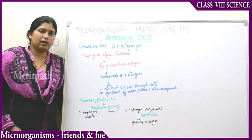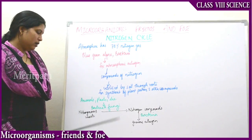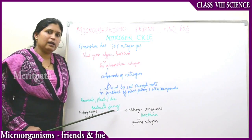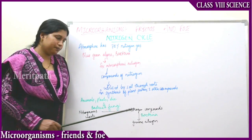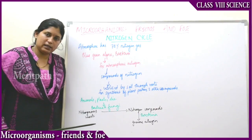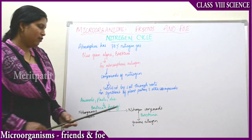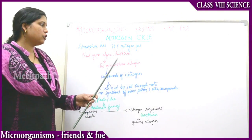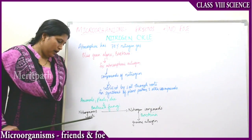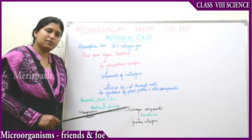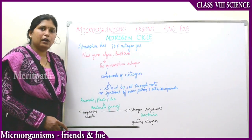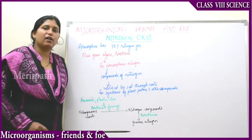When animals and plants die, there are remains on the ground. The nitrogenous waste of their bodies, with the help of bacteria and fungi, will be converted into nitrogen compounds. These nitrogen compounds will then be converted back into atmospheric gaseous nitrogen with the help of one type of bacteria.